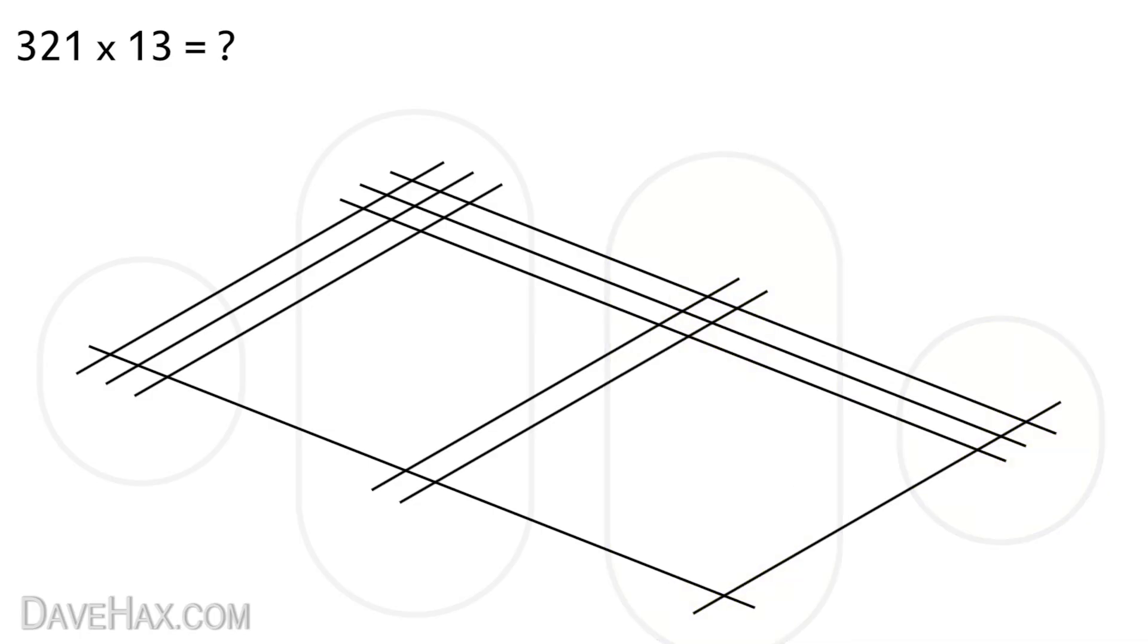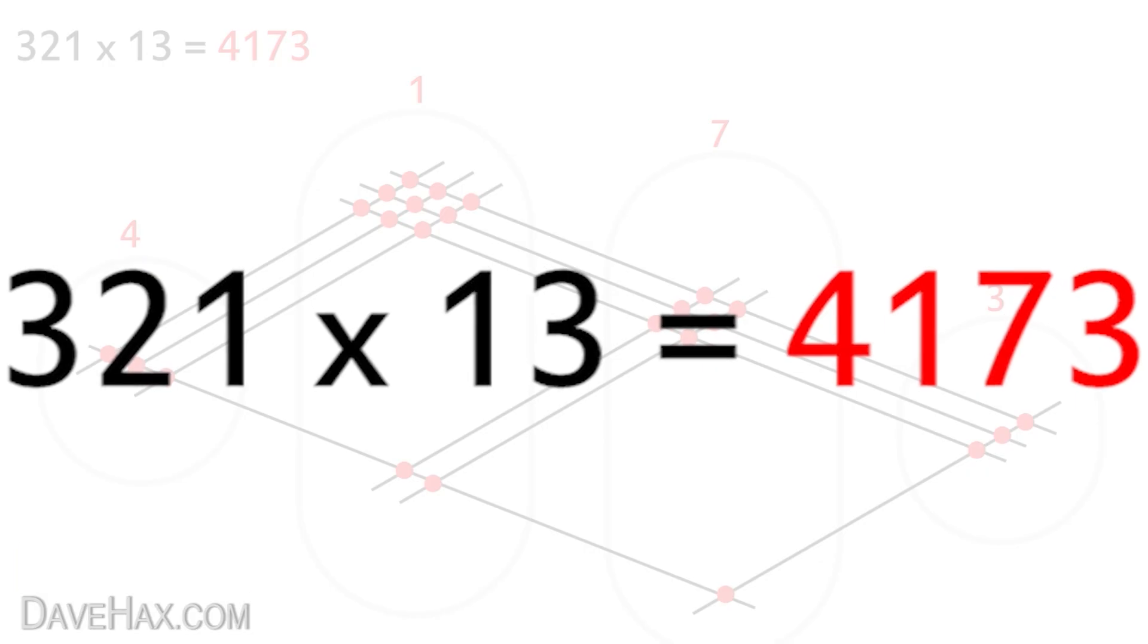Then starting from the right again we'll count out the dots. 3, 1 at the bottom 2 3 4 5 6 7, then 1 2 3 4 5 6 7 8 9 10 11. So again we leave the last digit there, carry the first digit over to the next zone and add it to the dots. 1 2 3 plus 1 gives us 4. 4 1 7 3. So our answer 321 times 13 is 4173.